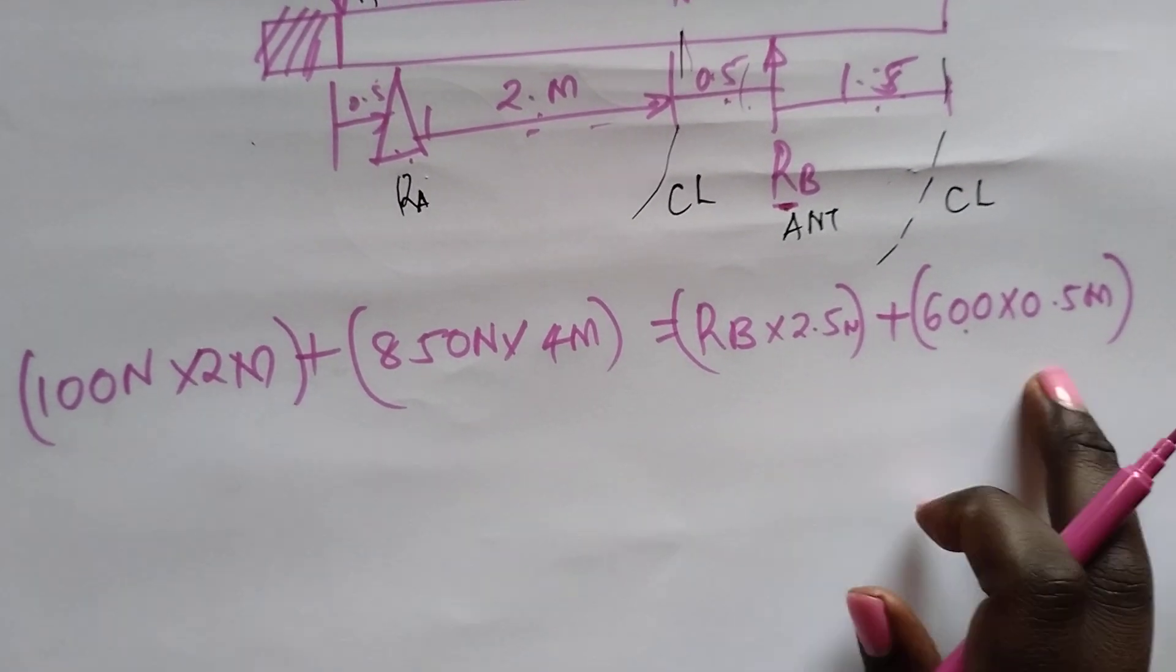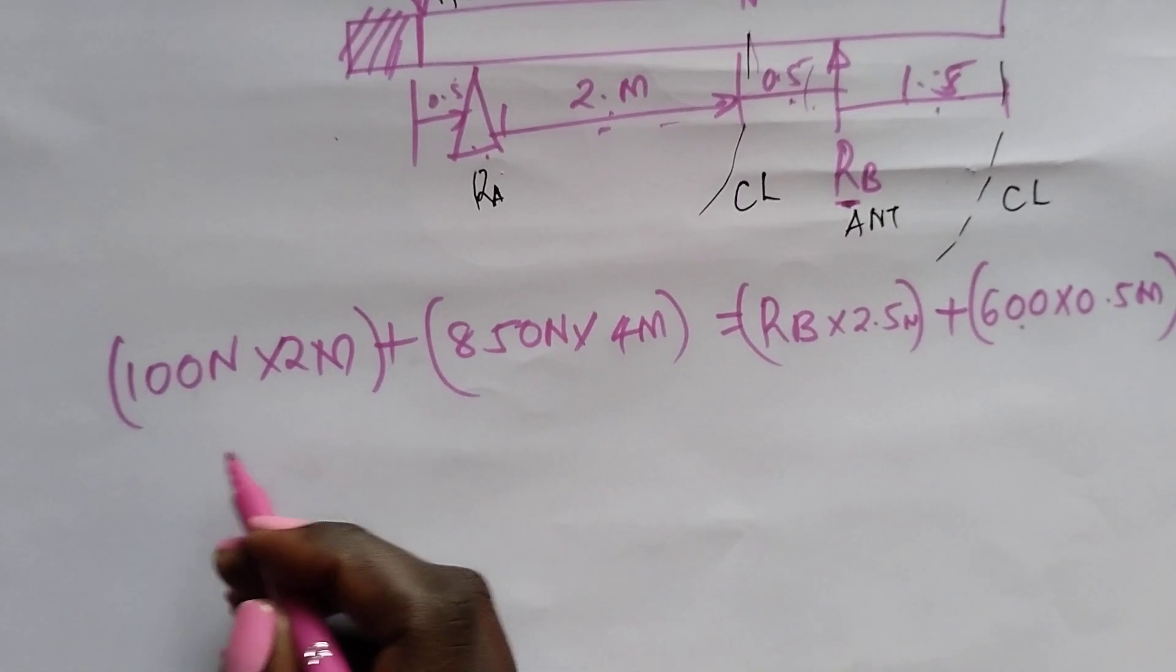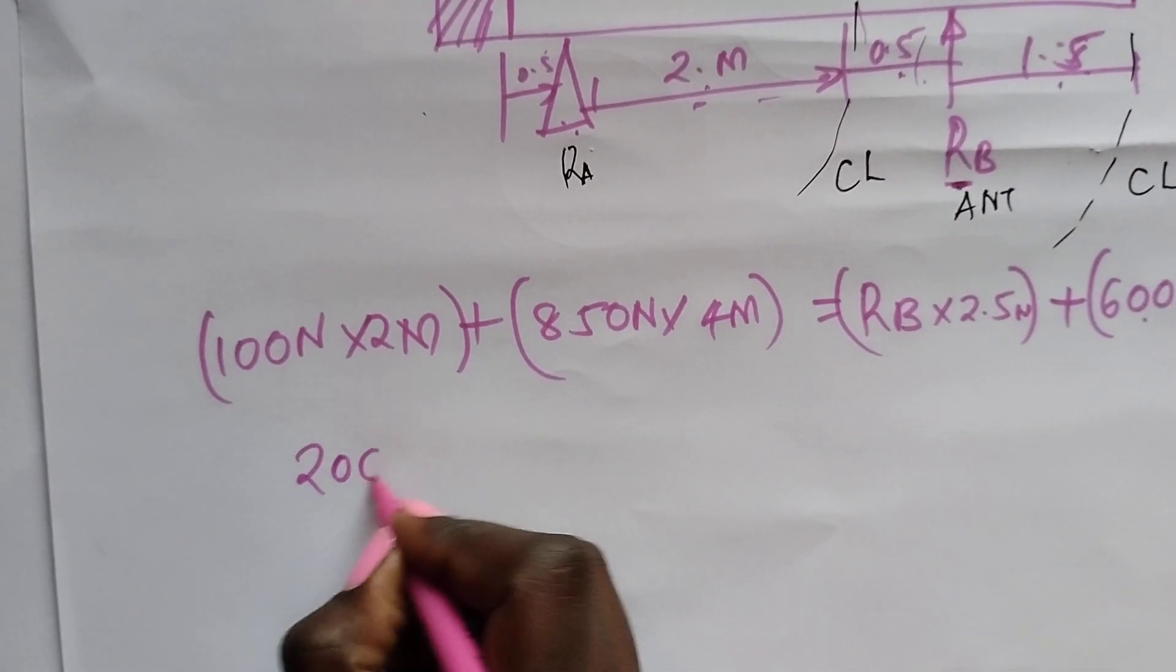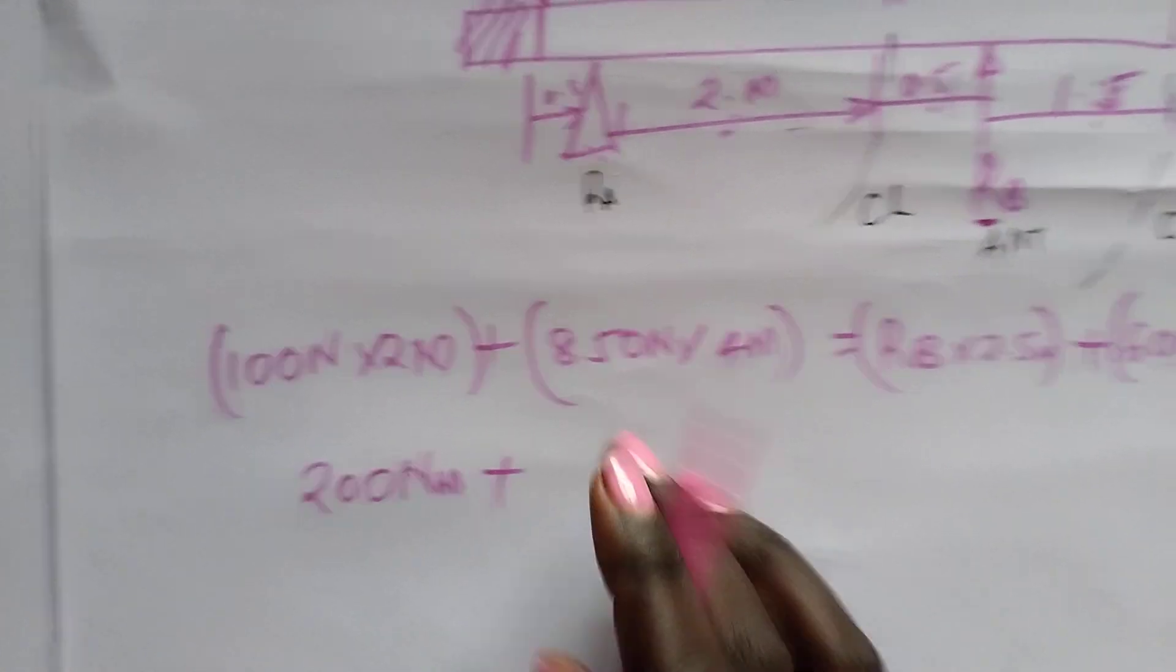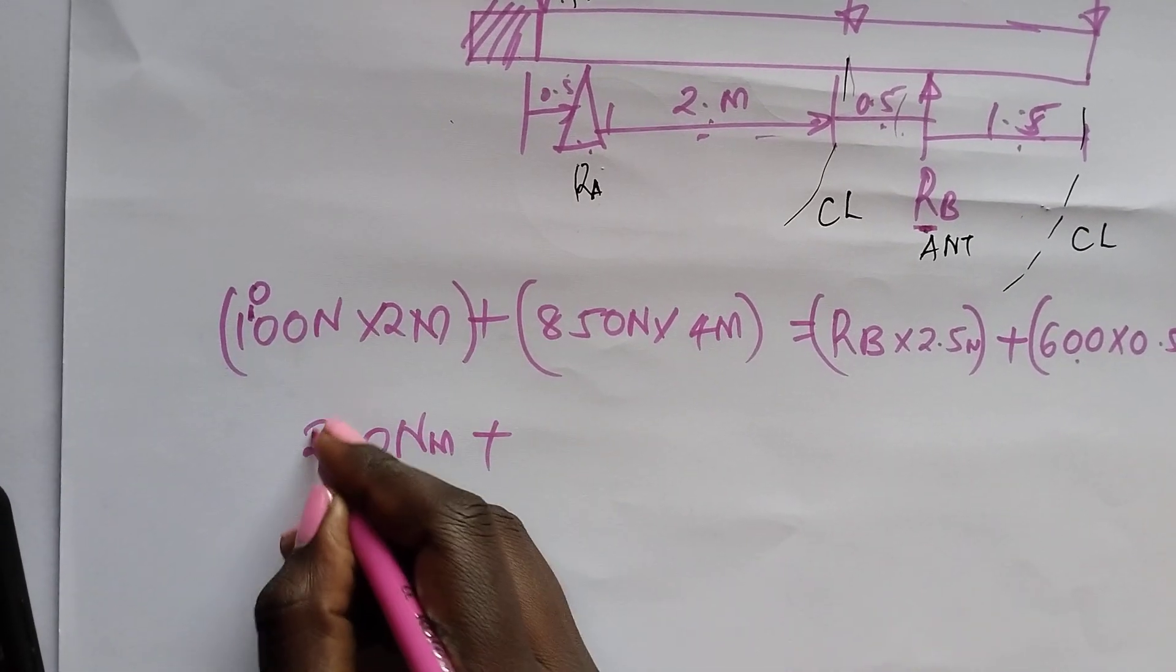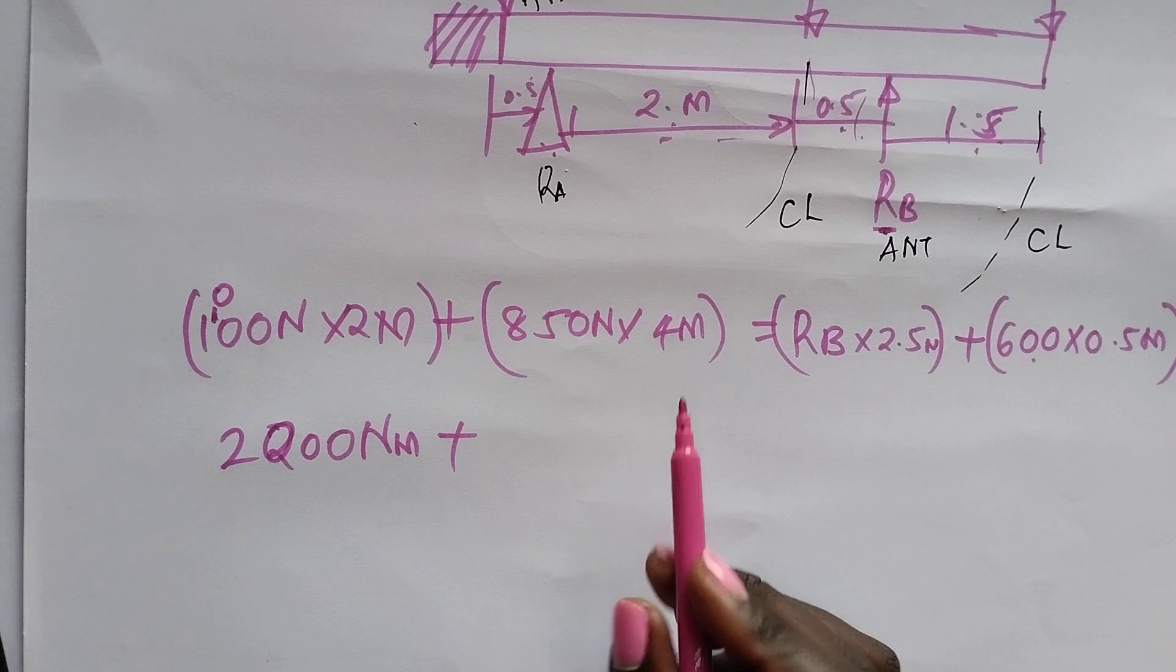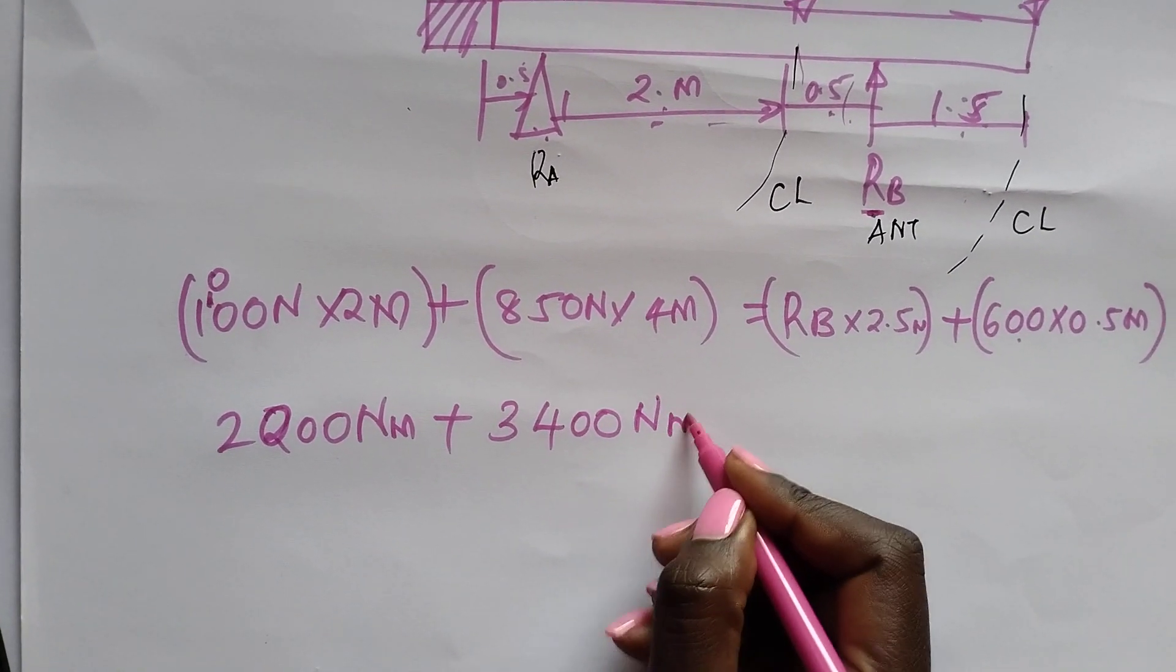So you can go ahead and get the products of these moments. So this would be, a thousand times 2 would be 2,000 newton meter. 850 times 4 would be 3,400 newton meter.